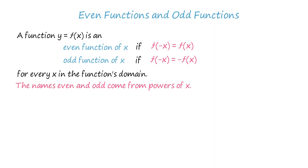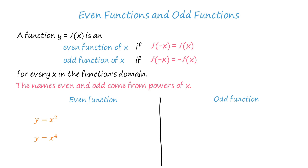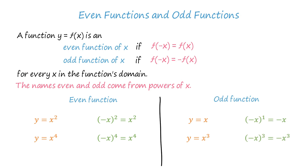The names even and odd come from powers of x. If y is an even power of x, as in y equals x squared and y equals x to the power 4, it is an even function of x because the square of negative x equals x squared, and negative x to the power 4 equals x to the power 4. If y is an odd power of x, as in y equals x and y equals x cubed, it is an odd function of x because the first power of negative x equals negative x, and the cube of negative x equals negative x cubed.